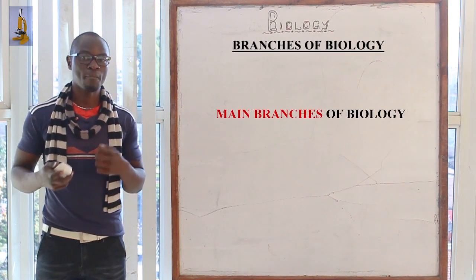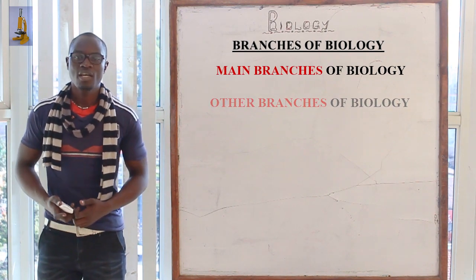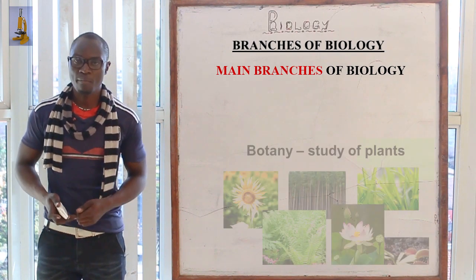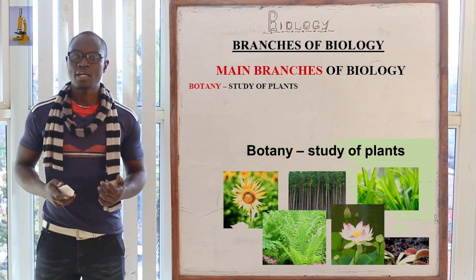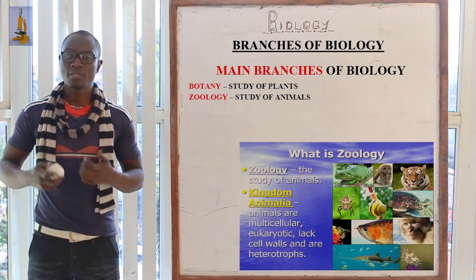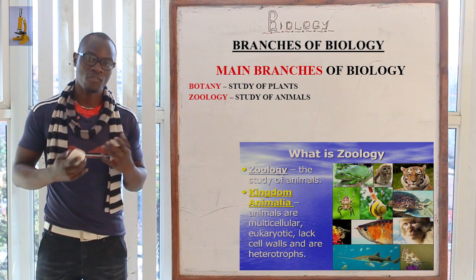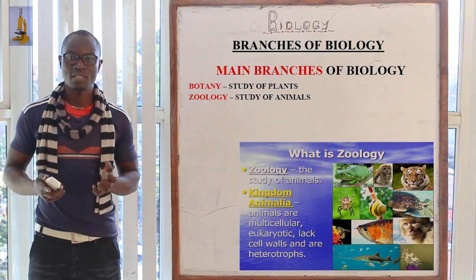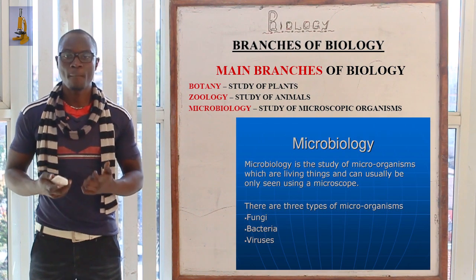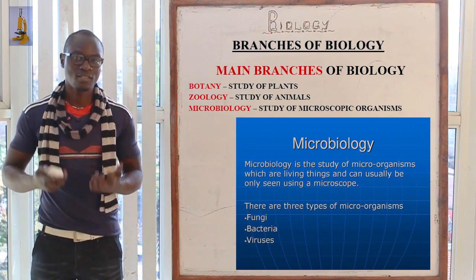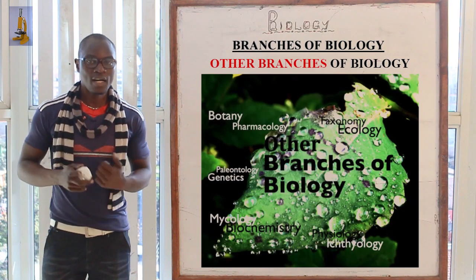Biology has different branches. We have the main branches of biology and the other branches. The three main branches are: botany, which is the study of plants; zoology, which is the study of animals — just as a zoo is where animals are found; and microbiology, which encompasses the study of microscopic organisms.